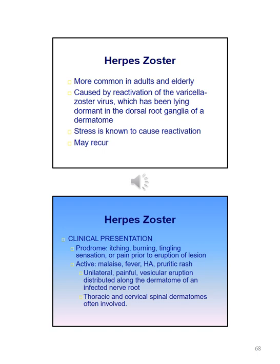Herpes zoster is more common in adults and elderly and is caused by reactivation of the varicella zoster virus, which has been lying dormant in the dorsal root ganglia. Stress is known to cause reactivation. Clinical presentation includes a prodrome phase with itching, burning, and tingling or pain prior to eruption. The active phase includes malaise, fever, headache, and pruritic rash. It is usually unilateral, painful, with a vesicular eruption distributed over a dermatome of an infected nerve root. The thoracic and cervical spinal dermatomes are often involved.